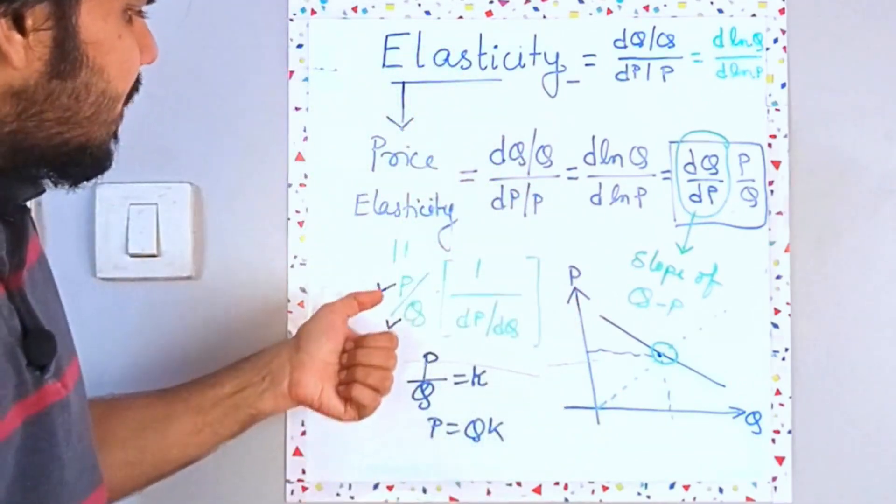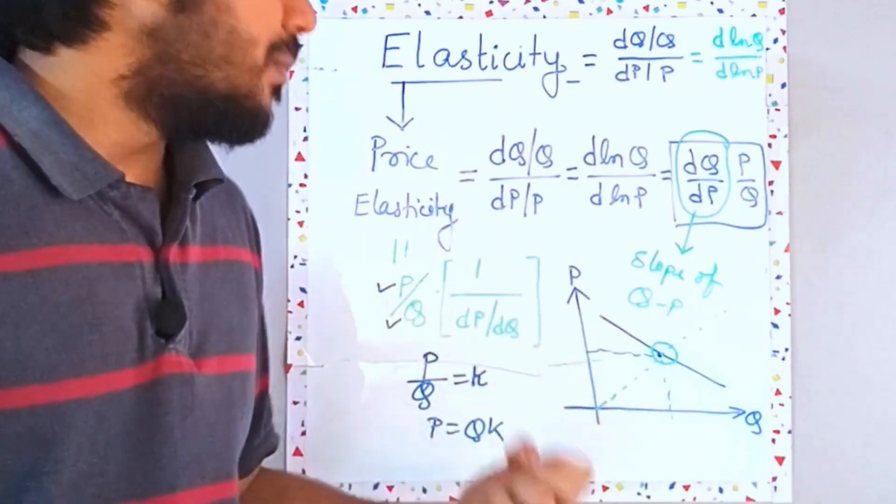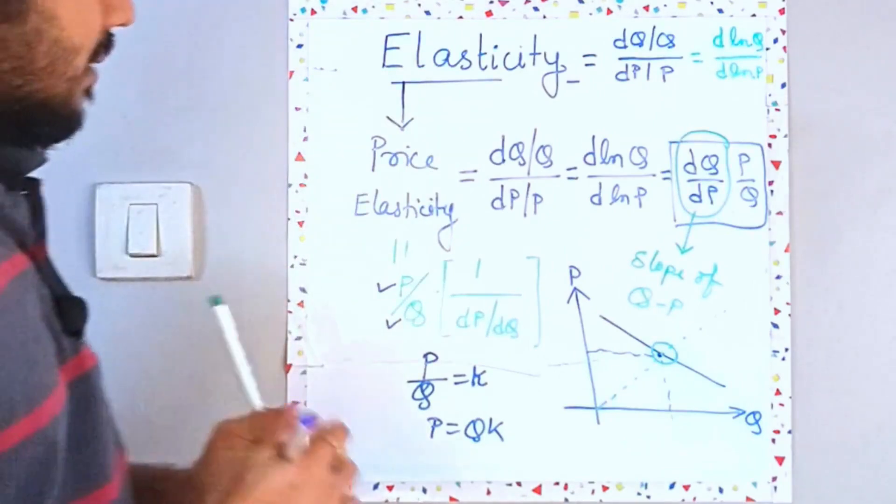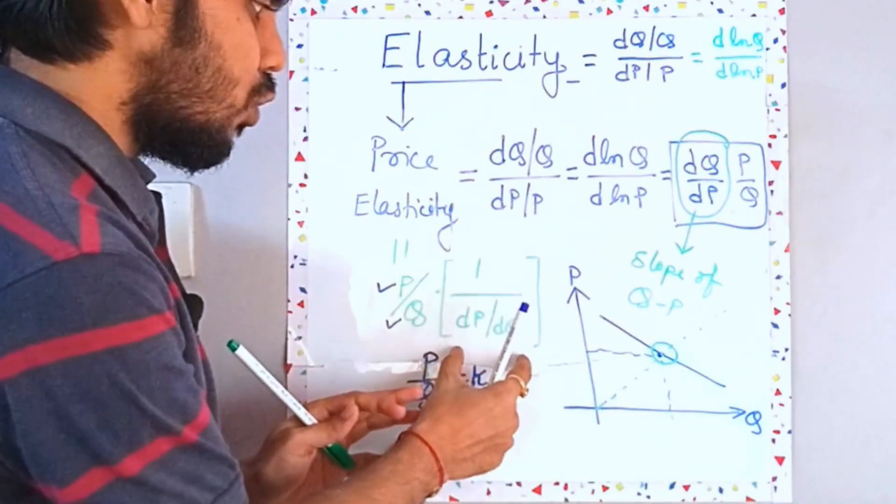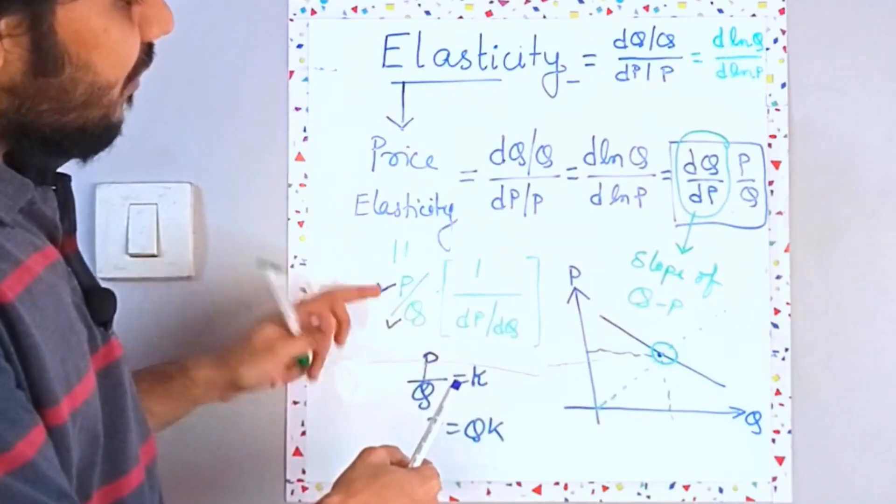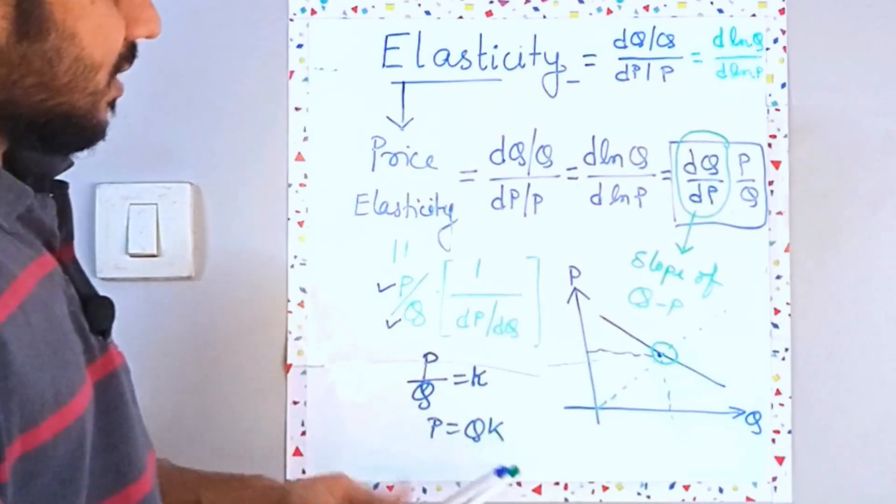So if your P is greater, right, for the same value of Q, you will have a greater elasticity. So what does this thing mean? So I need to have the same slope, same Q, right? But I need to have a higher P. How will that happen? Just think about it.